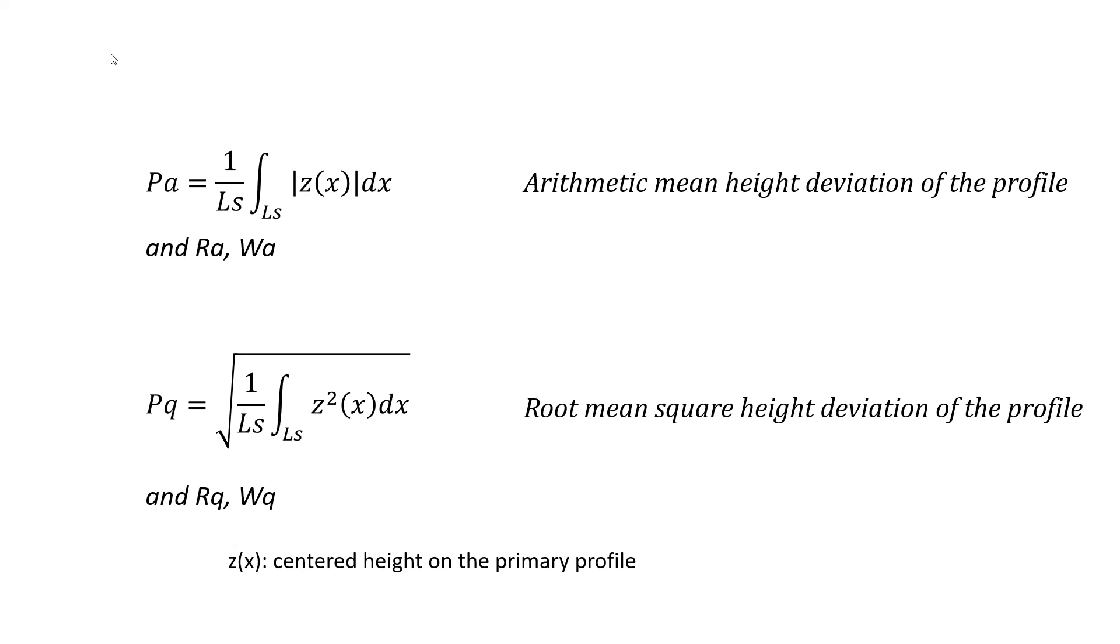RA is probably the most well known parameter and the most used in specifications. It does not mean that it is the most useful or meaningful, far from that. But it is usually the only one known by designers, and often the only parameter taught to students. Using RQ instead of RA would provide similar results but with a physical meaning.